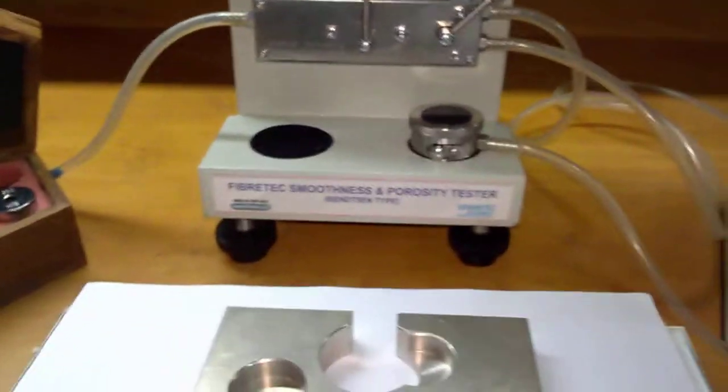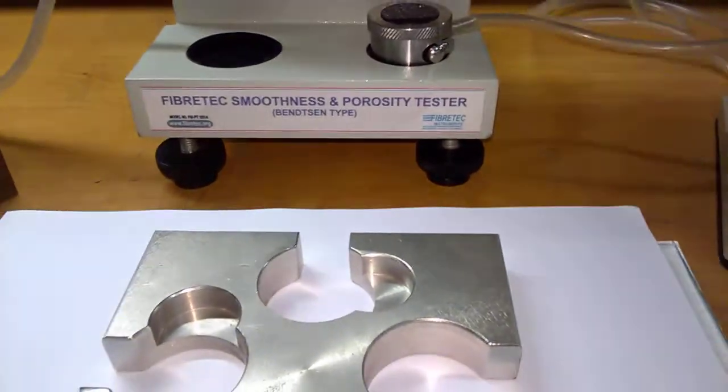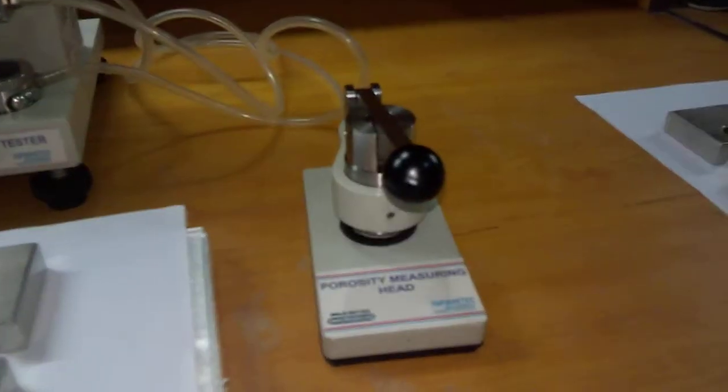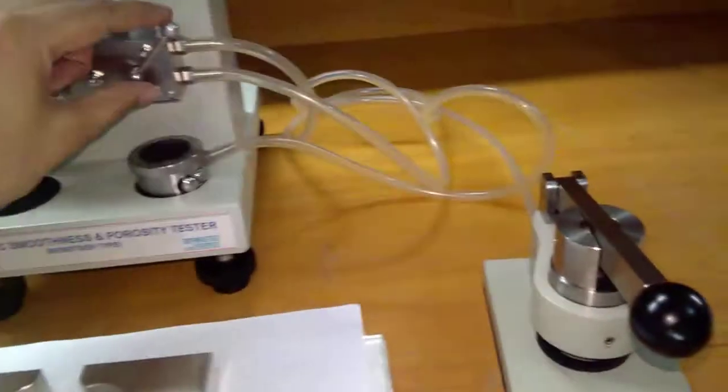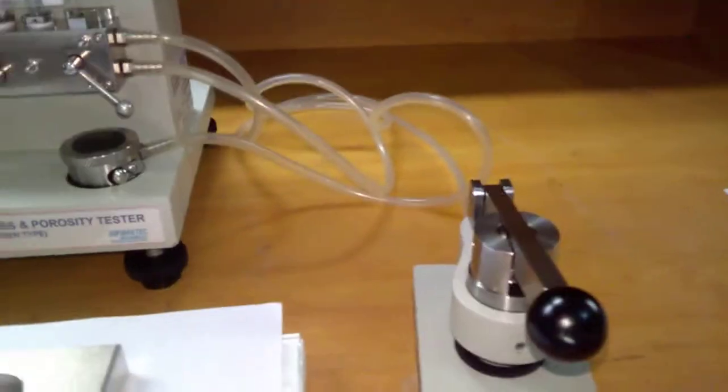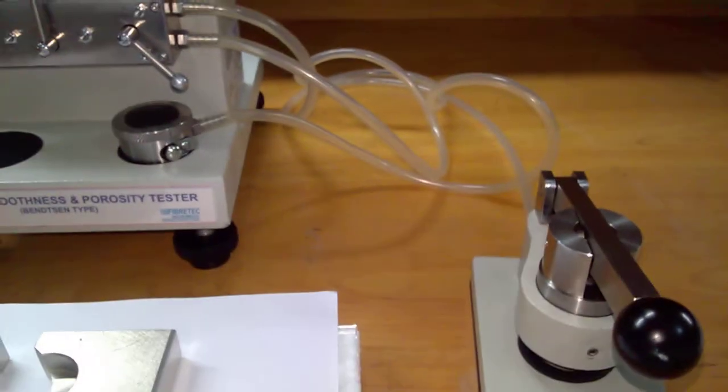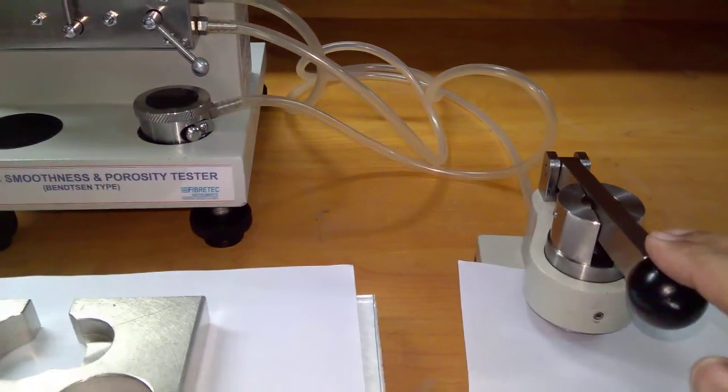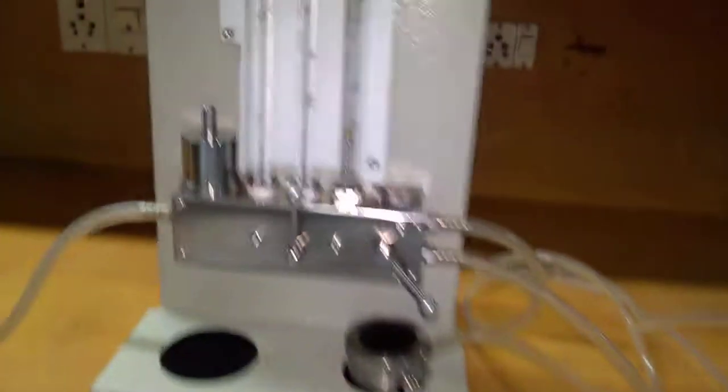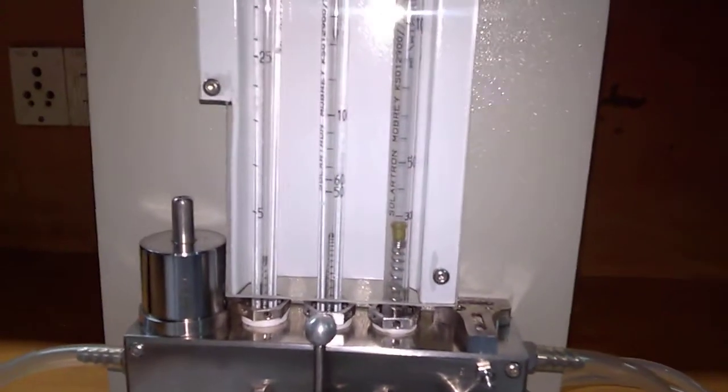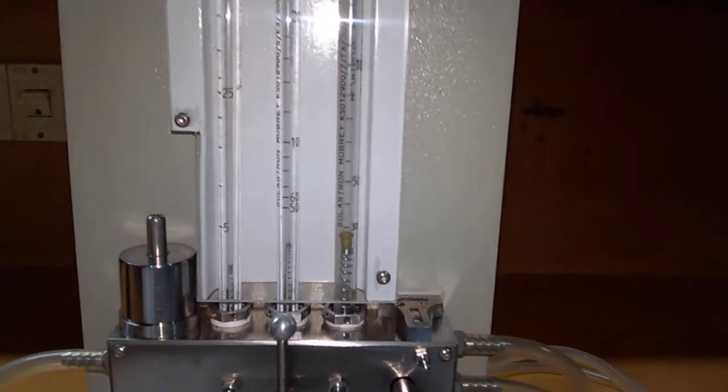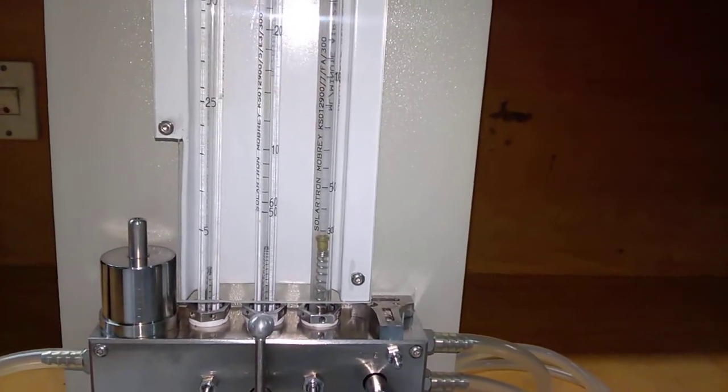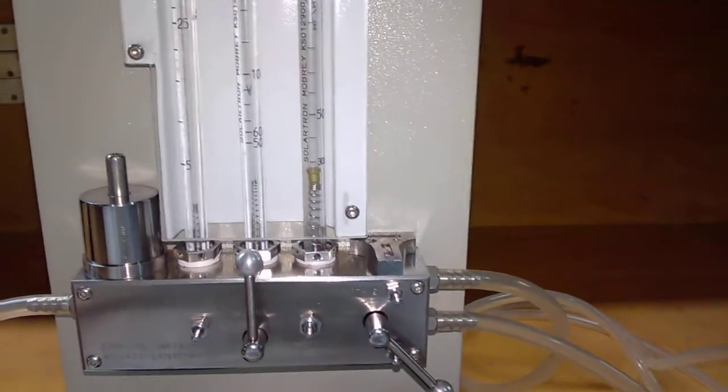When we have to measure the porosity, we use this particular head. Change the knob to the porosity position. Insert a paper here. It gives the porosity to be 140, 160.